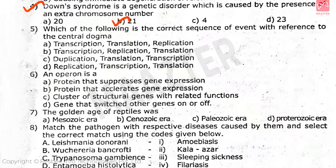Question 5: Which of the following is the correct sequence of events with reference to the central dogma? The answer is option D. Question 6: An operon is a — the correct answer is option C.